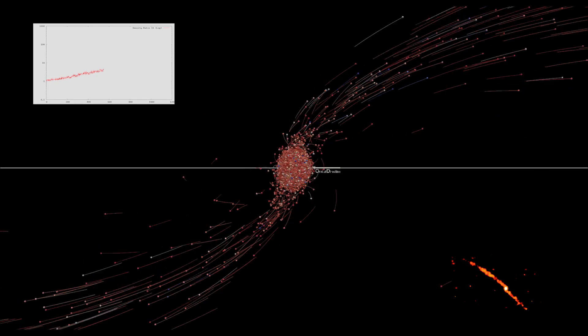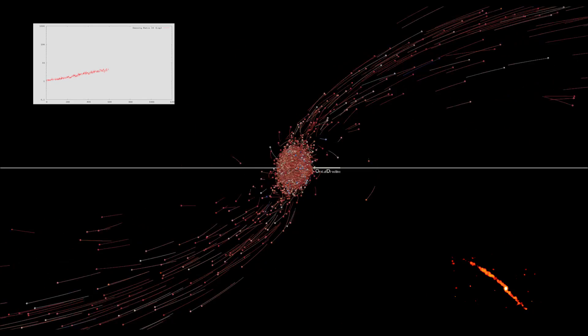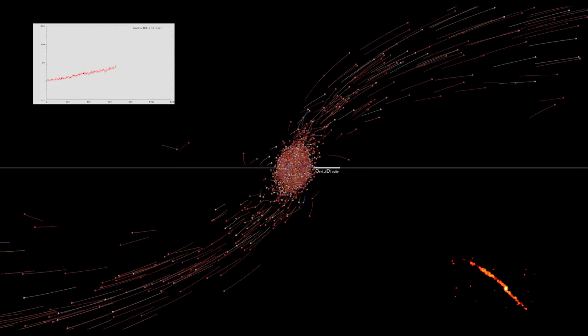The central density graph in the upper left corner reveals how the energy released by binary stars can halt the core collapse.